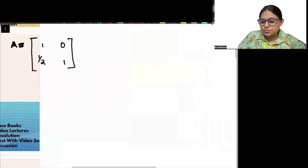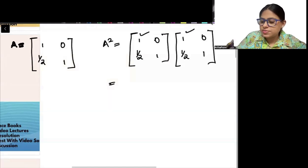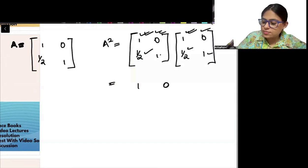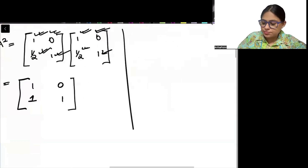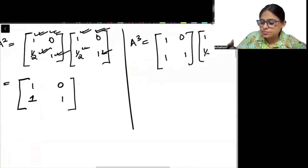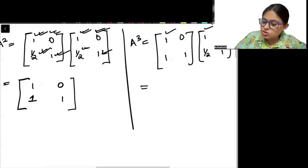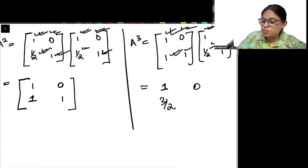So this is your A. What will be A squared? It will be A into A. Computing: [[1×1 + 0×(1/2), 1×0 + 0×1], [(1/2)×1 + 1×(1/2), (1/2)×0 + 1×1]] = [[1, 0], [1, 1]]. Now A cubed = A squared into A, which gives [[1, 0], [3/2, 1]].